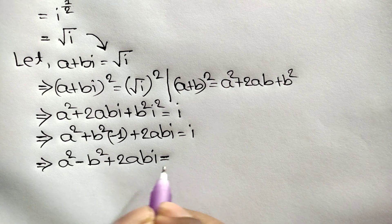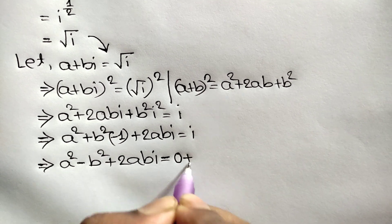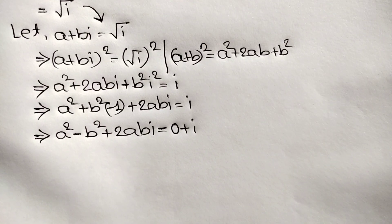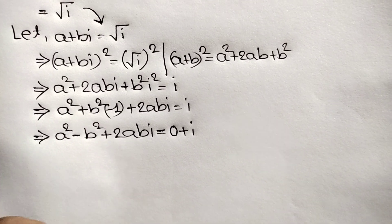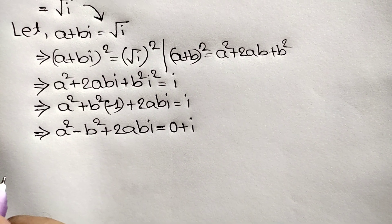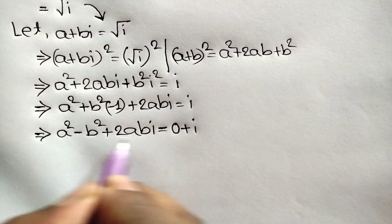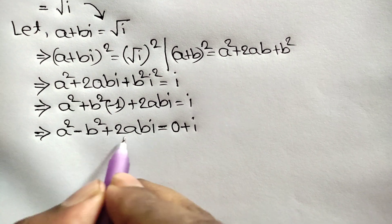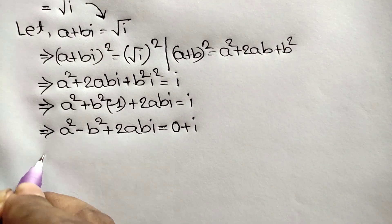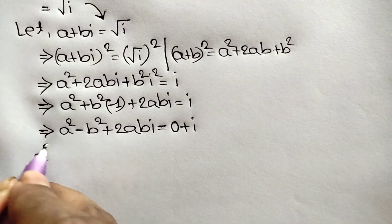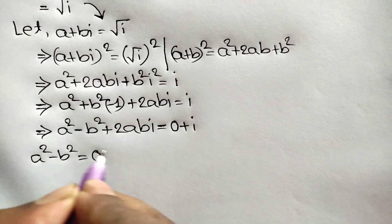We can write this as a squared minus b squared plus two abi equal to zero plus i. Now comparing real and imaginary parts: the real part gives a squared minus b squared equals zero, and the imaginary part gives two ab equals one.